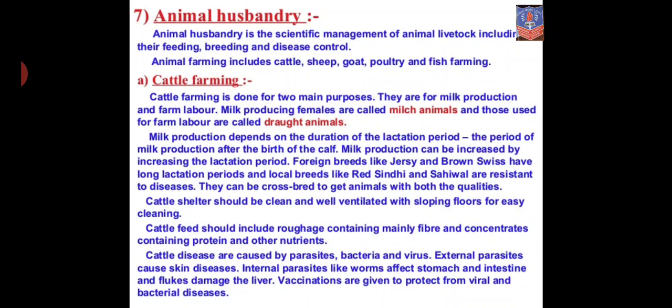To increase milk production, foreign breeds have been brought in, like Jersey and Brown Swiss, which have a long lactation period. There are also some local breeds, like Red Sindhi and Shahiwal, which are very resistant to diseases. Cross breeding is done between foreign and local breeds so that the new offspring will give more milk and also be disease resistant.